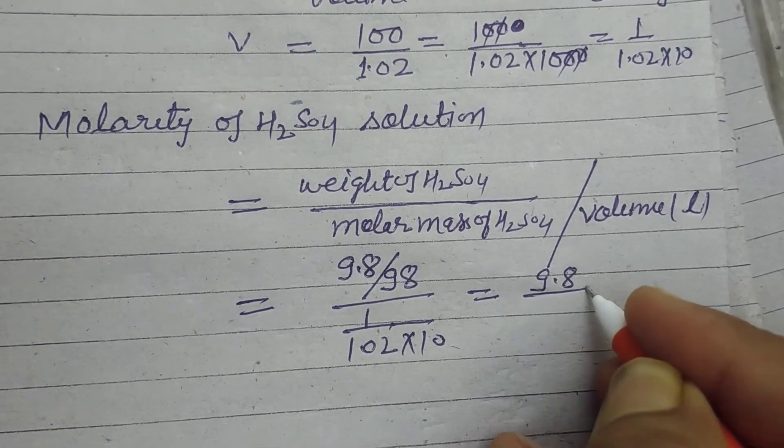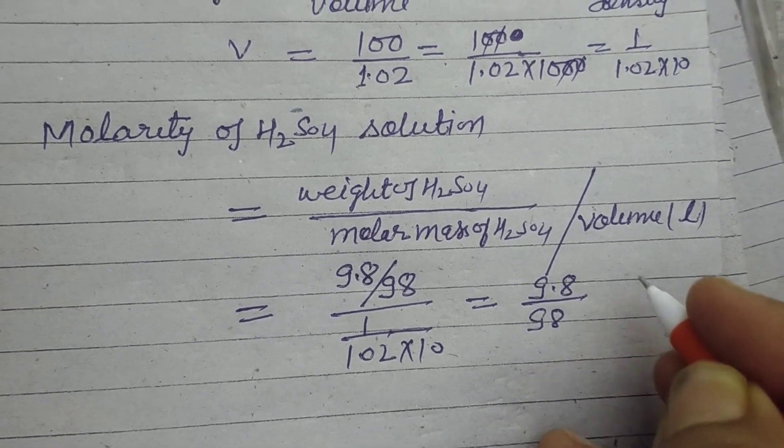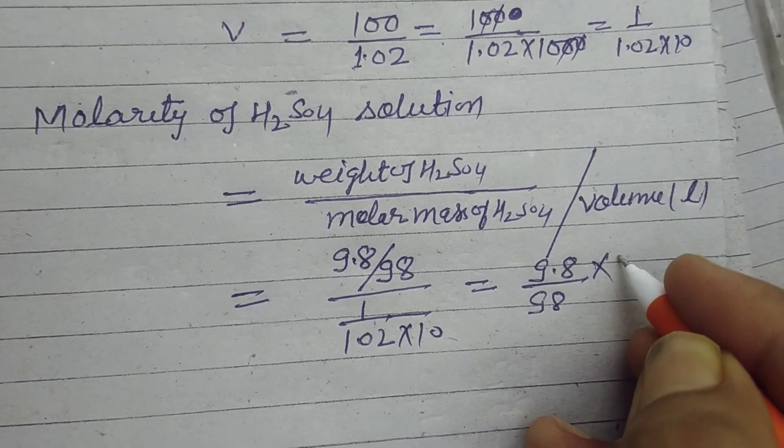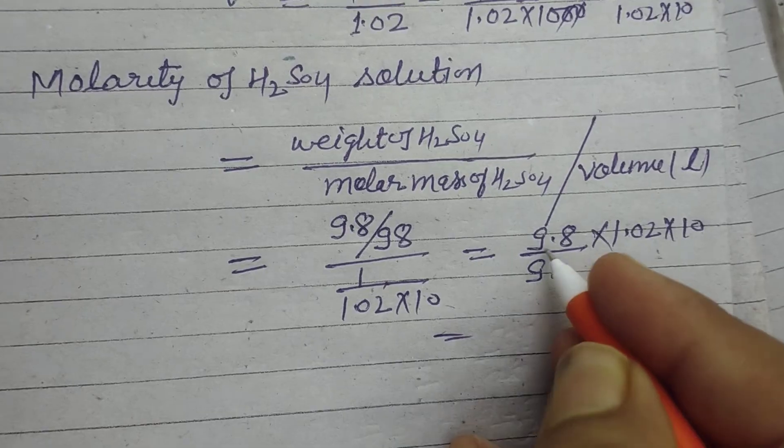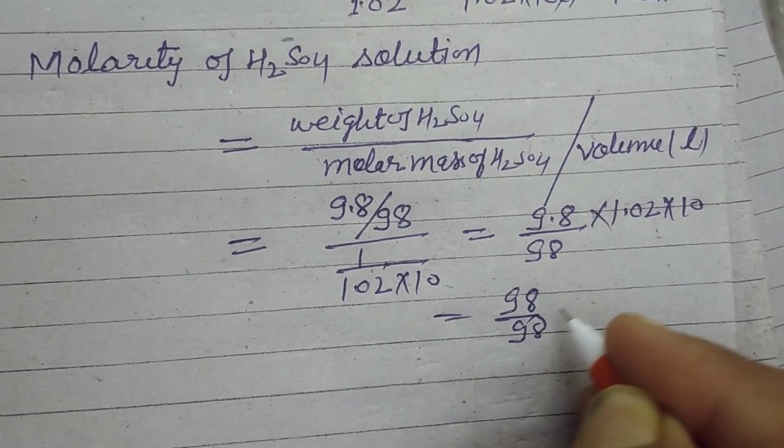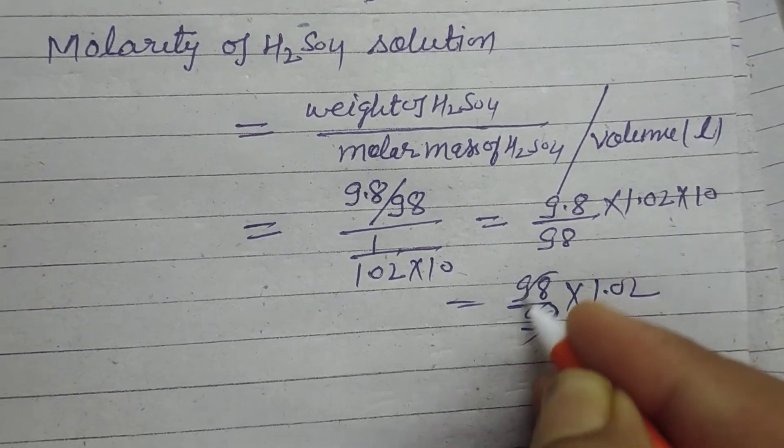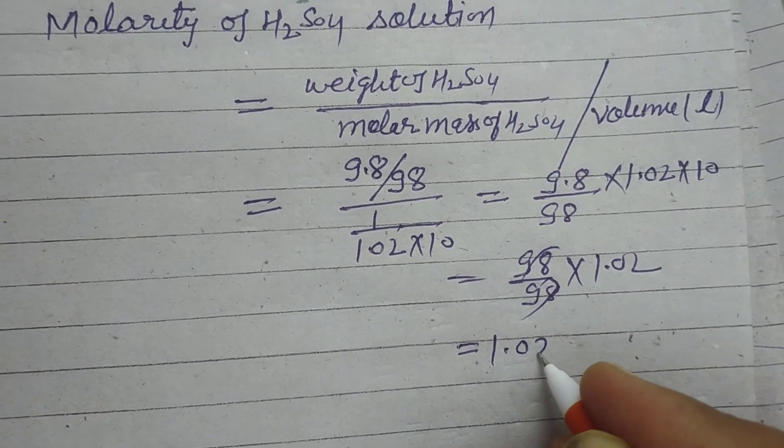So we got 9.8 upon 98, and this is in numerator, 1.02 into 10. So 9.8 into 10 is 98 upon 98 into 1.02. 98 cancels, we got 1.02.